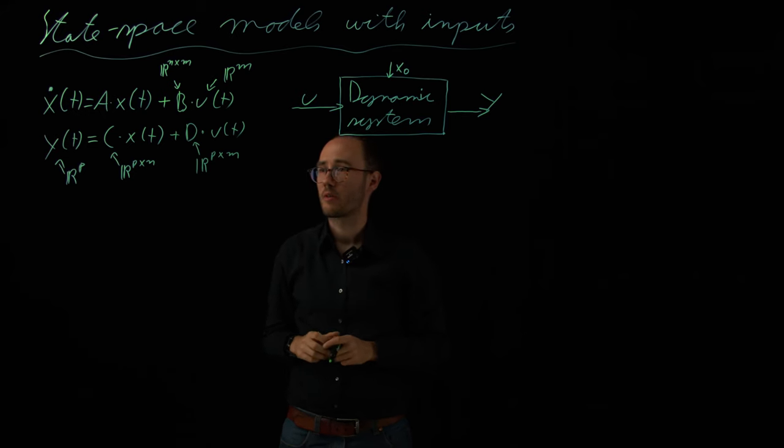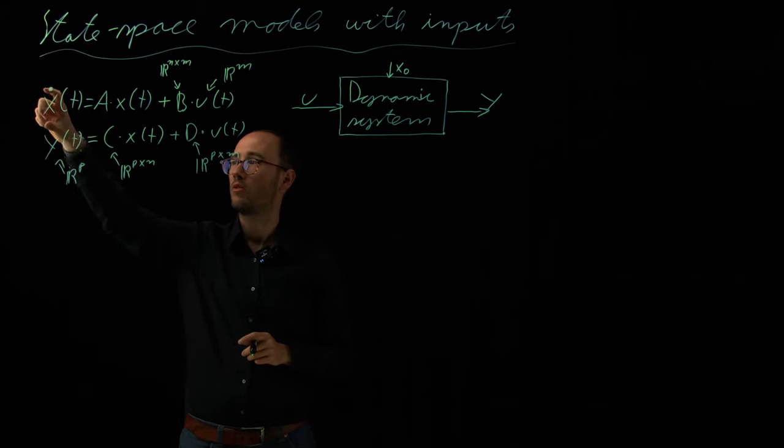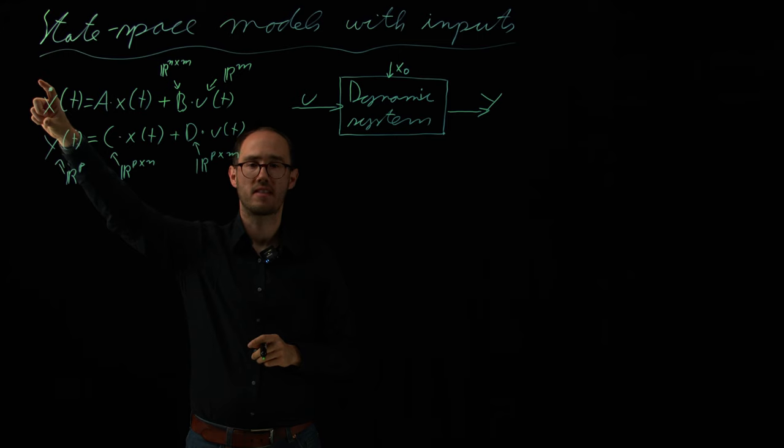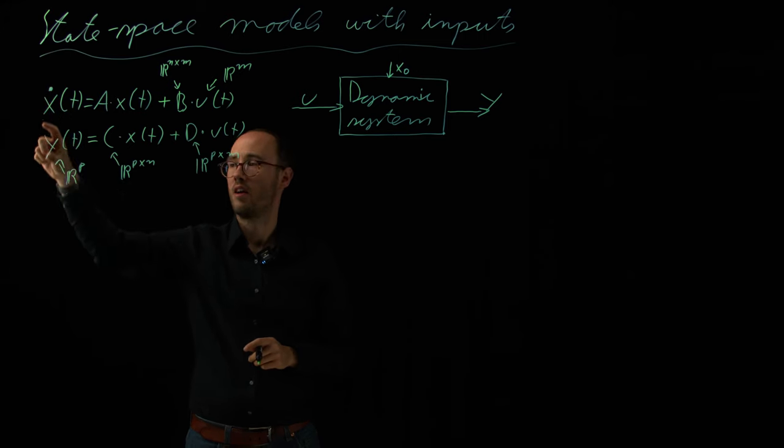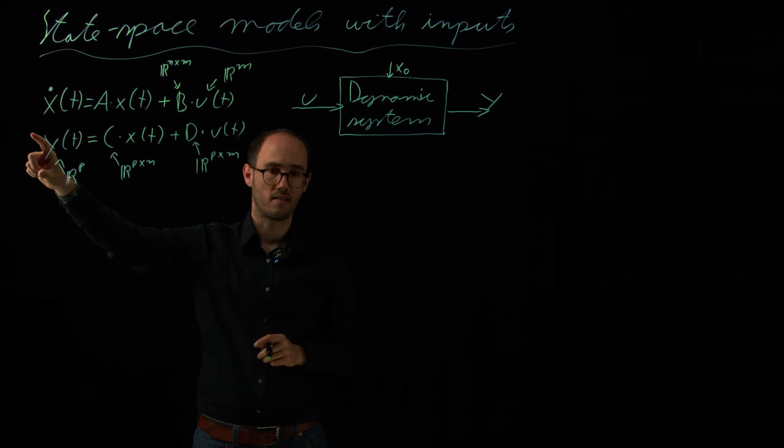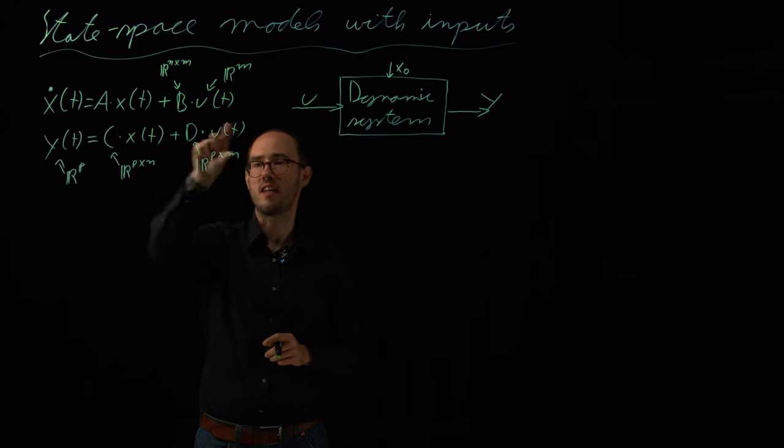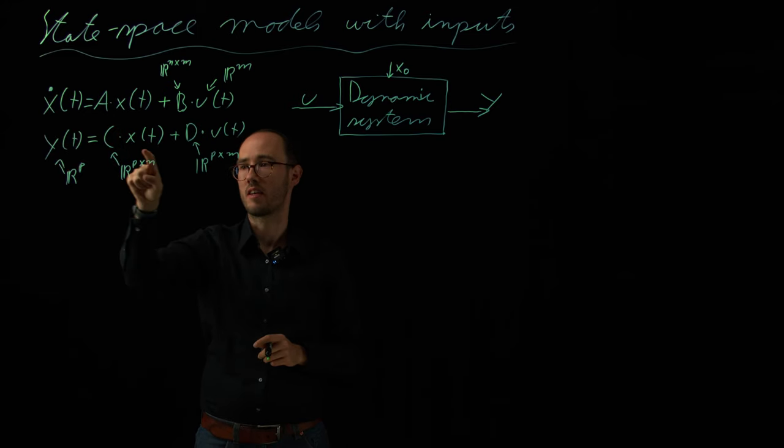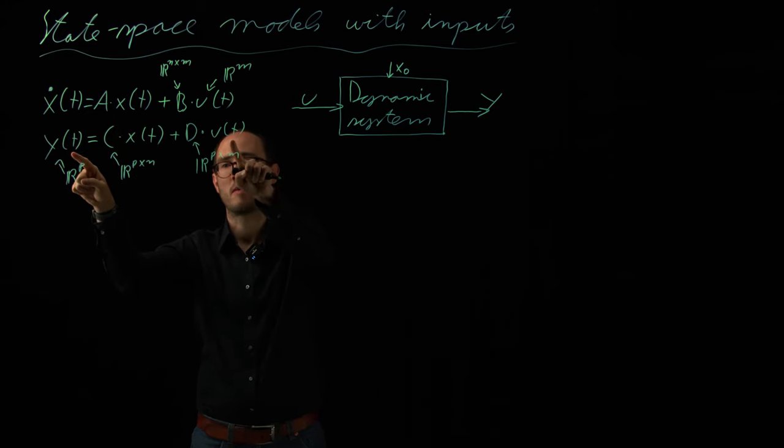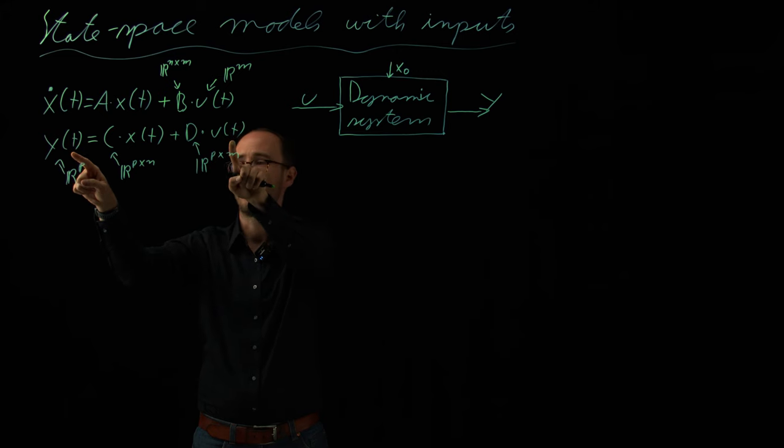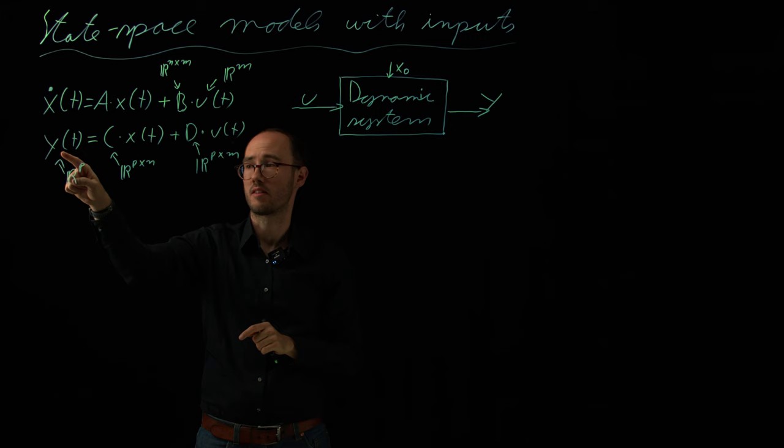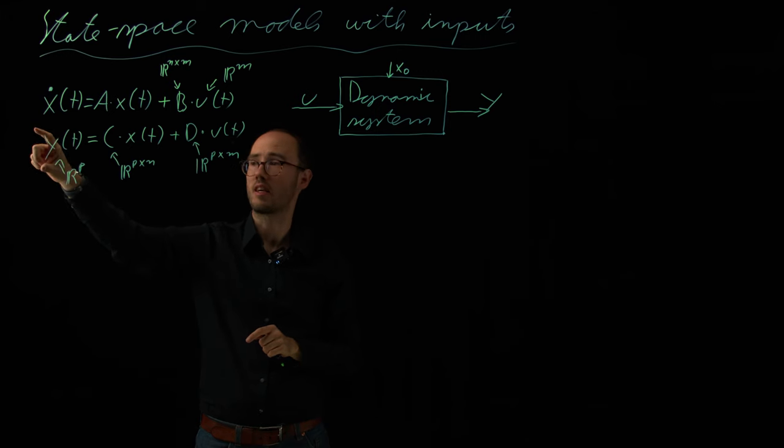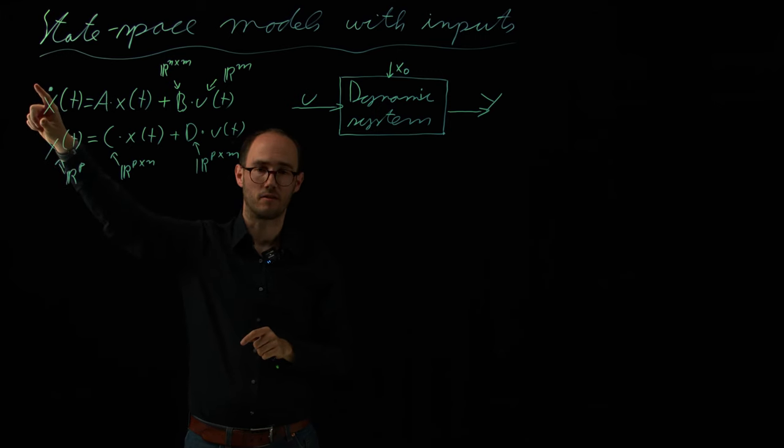What we can observe from this equation is that only the state equation is basically a dynamic equation considered in linear ODE. Our measurement equation on the other side is an algebraic, a static equation, because we do not have here any additional time dependency. We have just a one-to-one mapping for the same time points of x and u towards the measurement y of t. So, this is a static or algebraic equation, this is a differential equation.